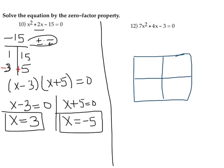In the first example, I could use the shortcut method because of the fact that my coefficient for the x squared term was 1. But in this case, I have a coefficient of 7 for the x squared term. So I'm going to use the box method of factoring.